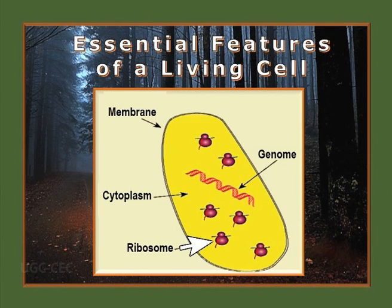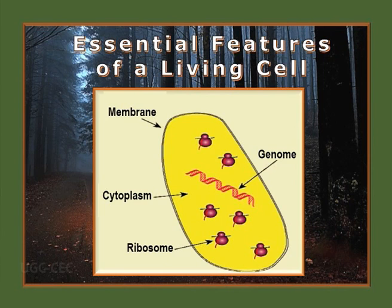Pictorially, the summary is that they should have a genome, a ribosome to carry on protein synthesis, a cytoplasm wherein all metabolic reactions are going on, and a membrane which transports nutrients, helps in energy generation, and is responsible for cell-to-cell signaling — receiving, generating, and transmitting signals.